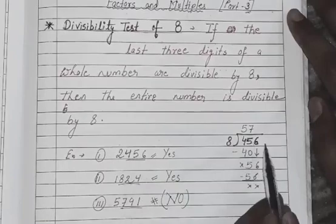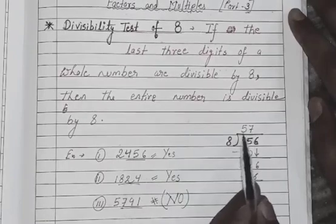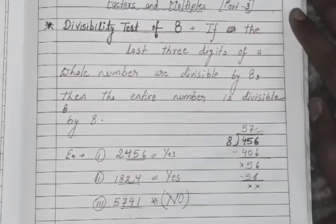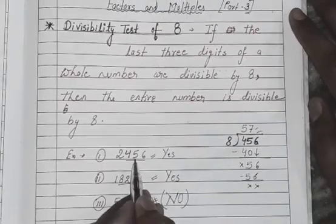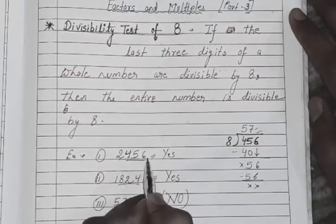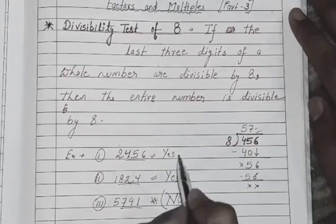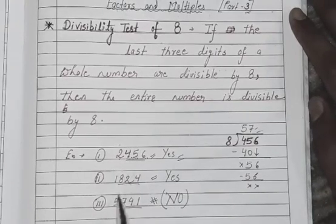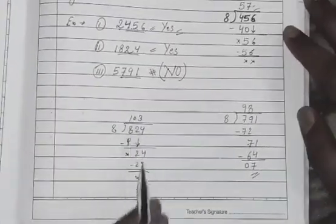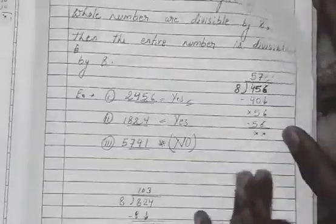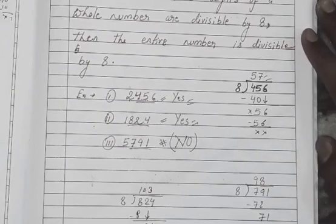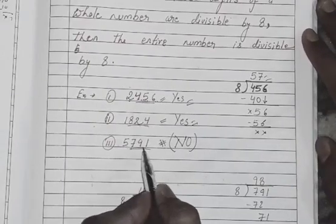For example, for the number 2456, if I take the last three digits — 456 — and divide by 8, it is divisible 57 times. So since 456 is divisible by 8, the entire number 2456 is also divisible by 8. Similarly, for 1824, the last three digits give a result divisible by 8, so 1824 is also divisible by 8.